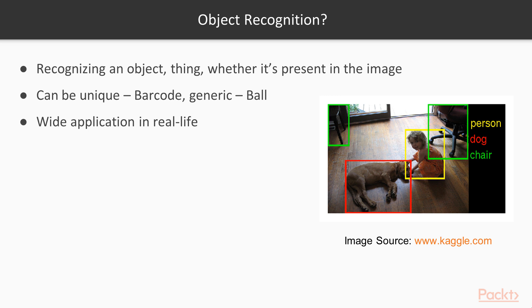It can be unique such as a barcode of a product, or generic such as a ball—it can be baseball, basketball, tennis ball, etc. As you can see in this image, the computer has detected a person, dog, and a chair and drawn rectangle boxes around it.